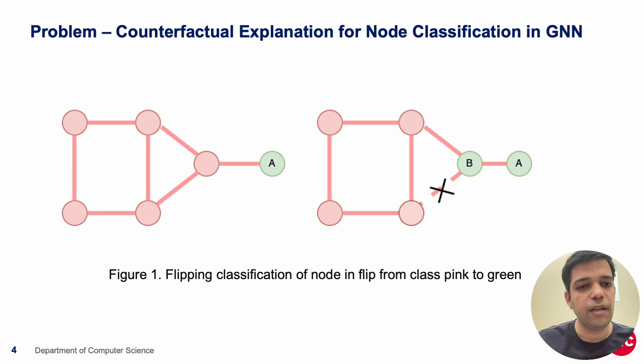So consider this figure on the right. We have a graph with five pink nodes and one green node. We want to know why the node at the intersection is labeled as pink. We give this node to the explainer and the explainer will give us the output as the set of edges that can be deleted to flip the classification for this.